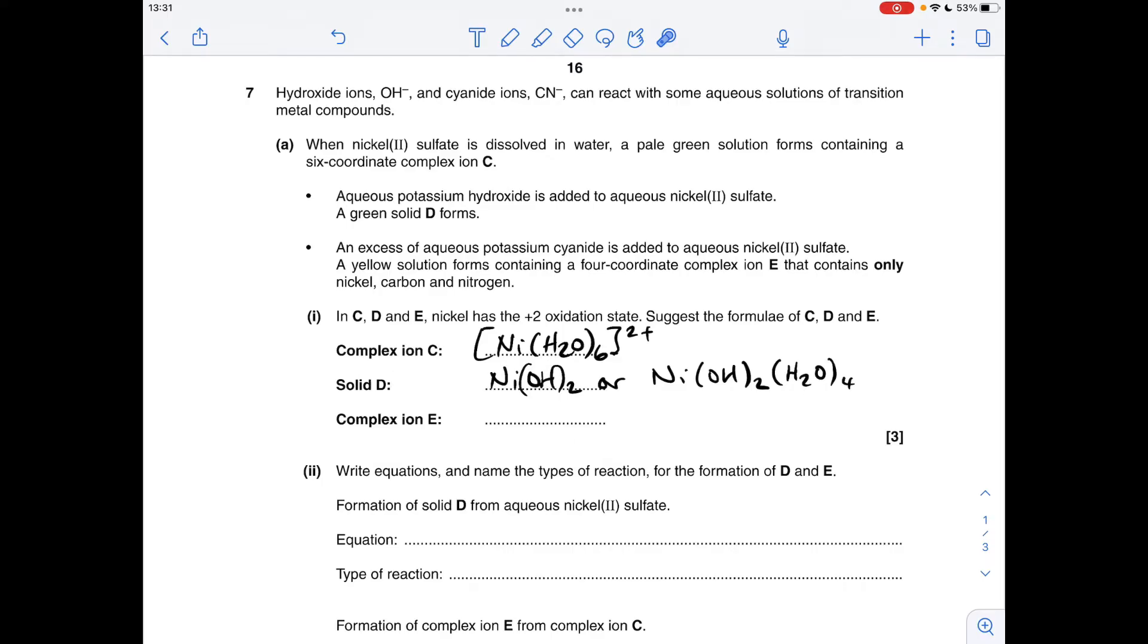The final one, a little bit trickier: the cyanide ions from aqueous potassium cyanide are going to react with the hexaaqua nickel(II) ion from the nickel(II) sulfate solution and we'll get this four coordinate complex. This is going to be nickel(II) cyanide with four cyanide ions around it. I'll explain the charge: we're dealing with nickel in its 2+ state, each cyanide ion has a 1- charge, we've got four of them, so the overall charge in this ion is 2-.